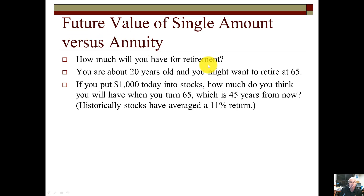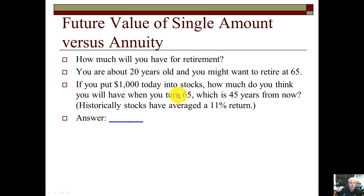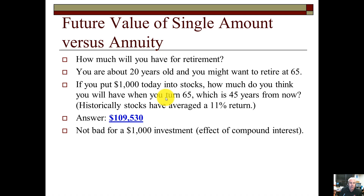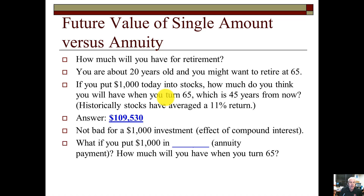How much will you have for retirement? Say you're 20 years old and want to retire at 65. If you put $1,000 today into stocks — 45 years from now — assuming a historical stock average of 11%, the answer would be $109,530. Not too bad for just a $1,000 investment.